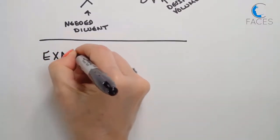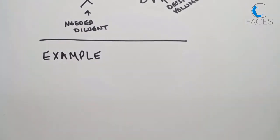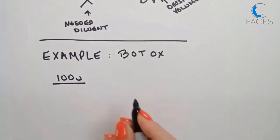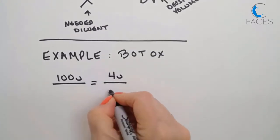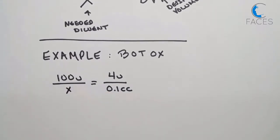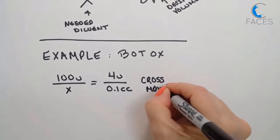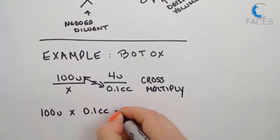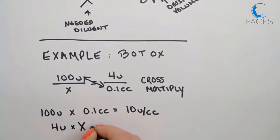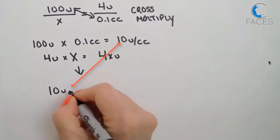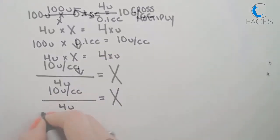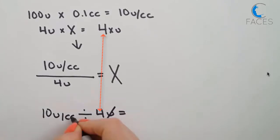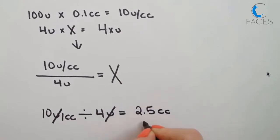Let's run through a couple of quick examples. Since most practitioners are already using the Allergan recommended Botox dilution of 2.5 cc's for every 100 unit bottle, most people know that this dilution yields 4 units in every tenth of a cc. So let's show how this equation would solve for that 2.5 cc's. Our first order of business is to cross-multiply: 100 units of Botox times 0.1 cc's equals 10 units per cc; 4 units times x equals 4x units. Now I divide the 10 units per cc by 4 units. I'll illustrate it here in the usual mathematical formula. The units cross out, and when you do the division, 10 divided by 4 is 2.5 cc's.